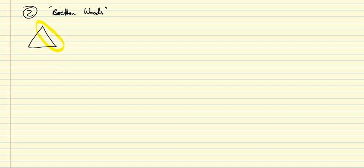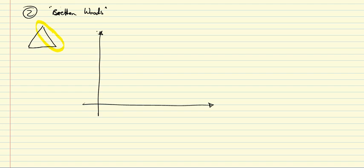To analyze this situation, we'll develop a simple model describing internal and external balance. First, we have a curve for internal balance, labeled II. Any point along this curve describes a situation of full employment and price stability within the country.